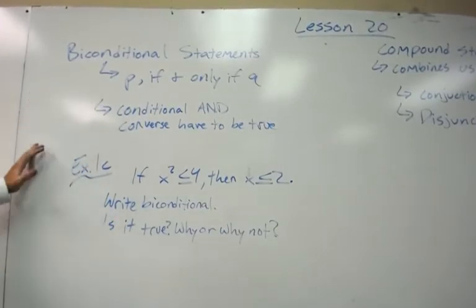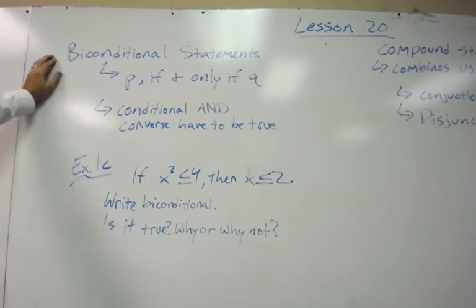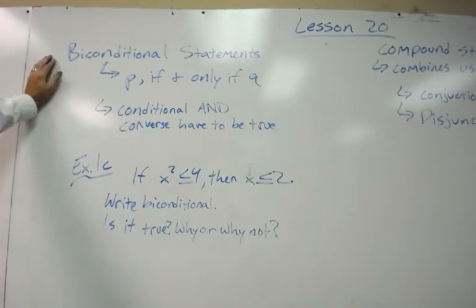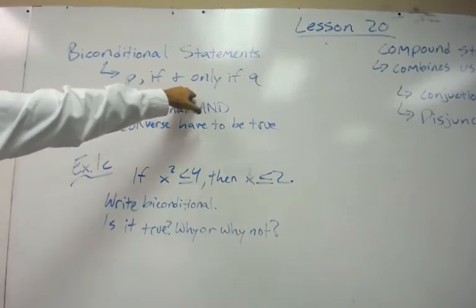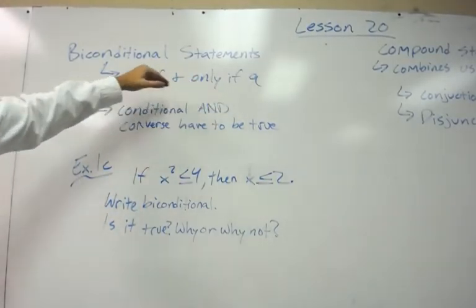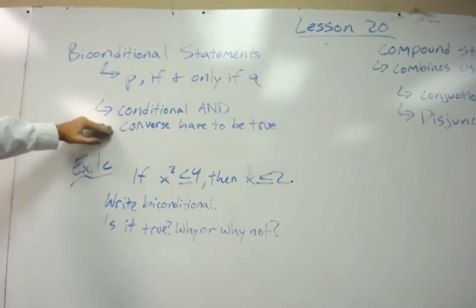This is one of the last logic lessons in geometry. But if we start by looking at a biconditional statement. Now, a biconditional statement is written in the form of P, if, and only if, Q. In order for this to be true, you would have to make sure that the conditional and the converse statement have to be true.